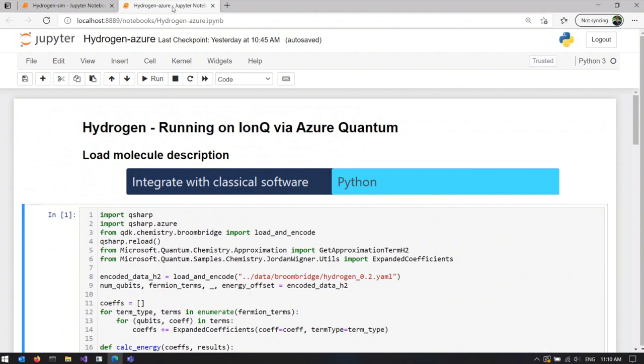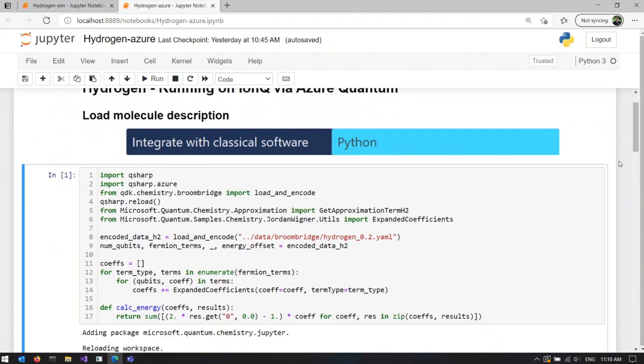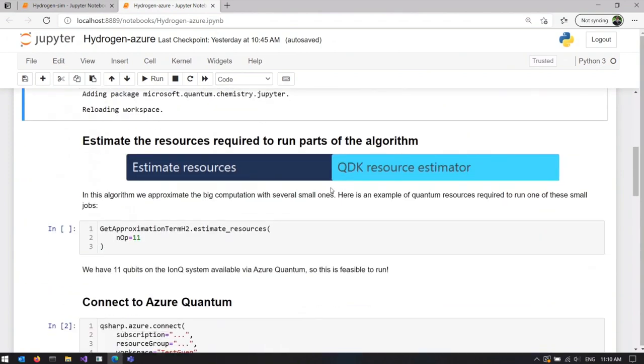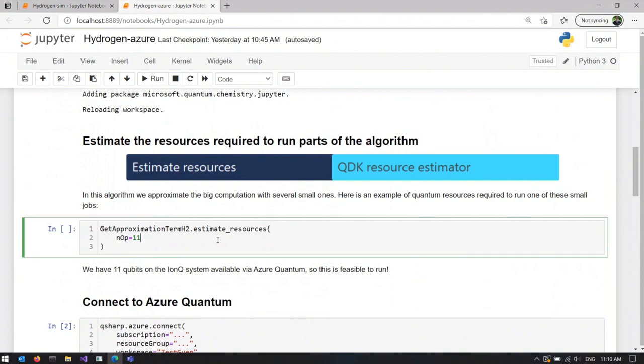That is going to give us slightly worse results, but it's going to be runnable on our hardware. Again, we start by executing the cell which loads the molecular description and defines some helper operations we're going to use for post-processing our results. Next, we do resource estimation again, but for different quantum program.